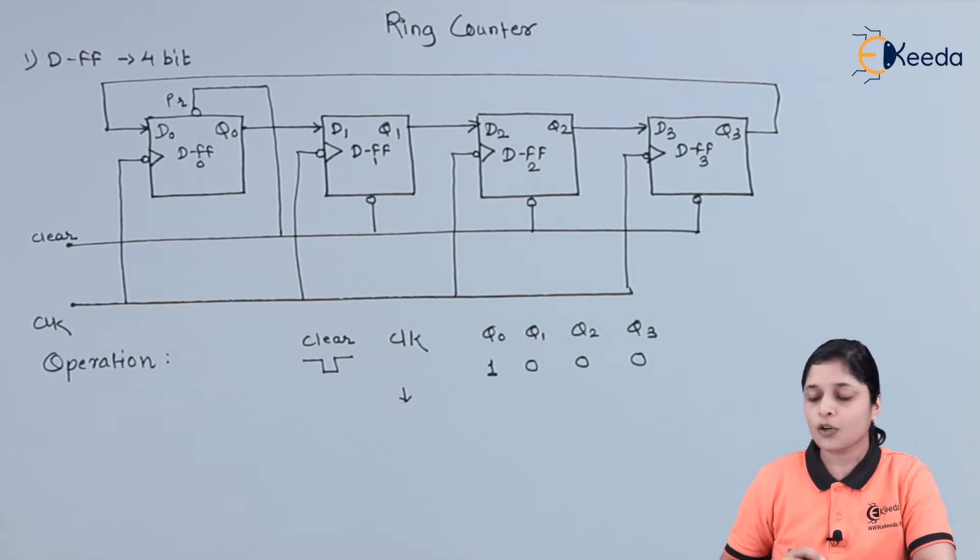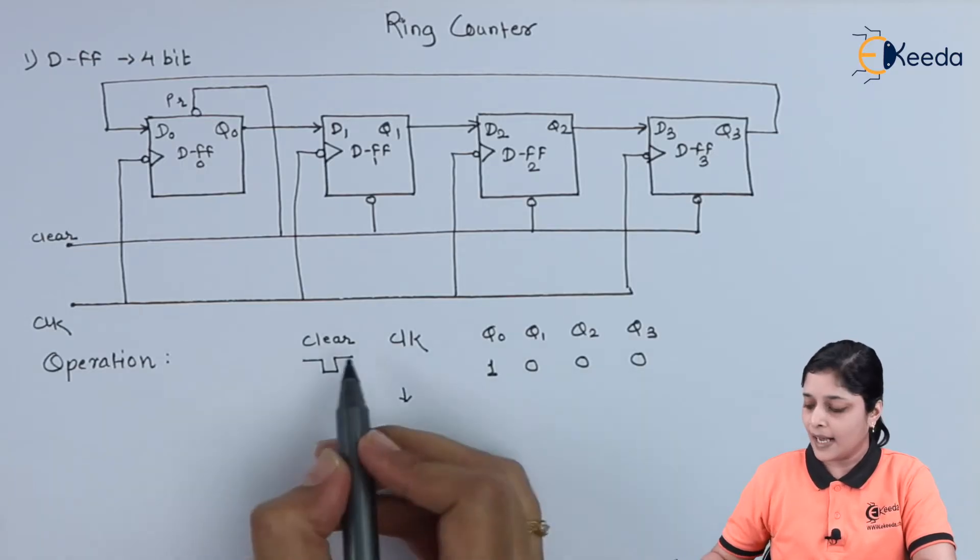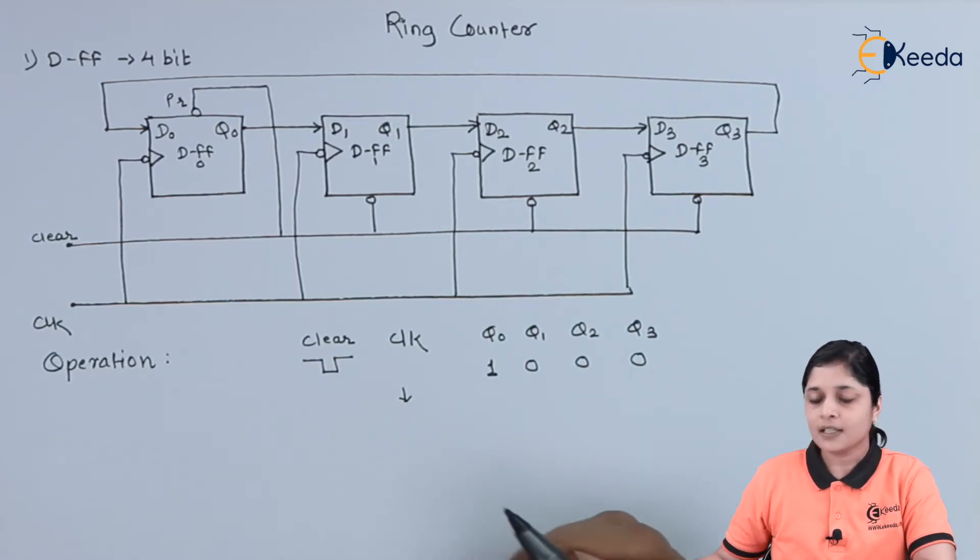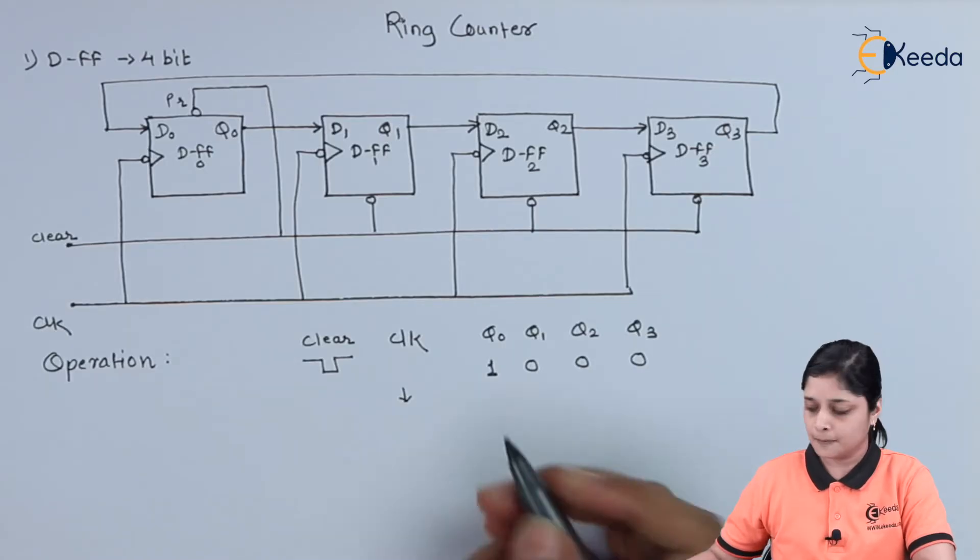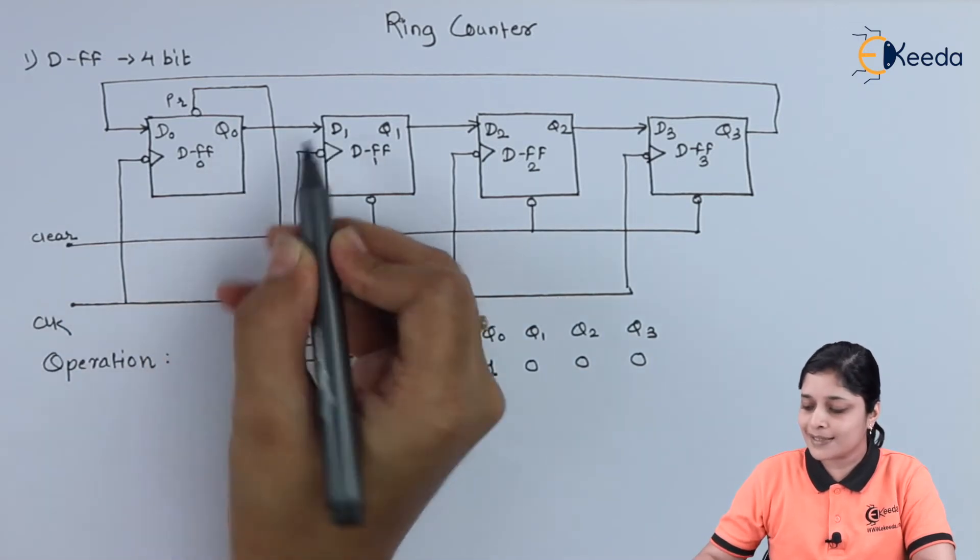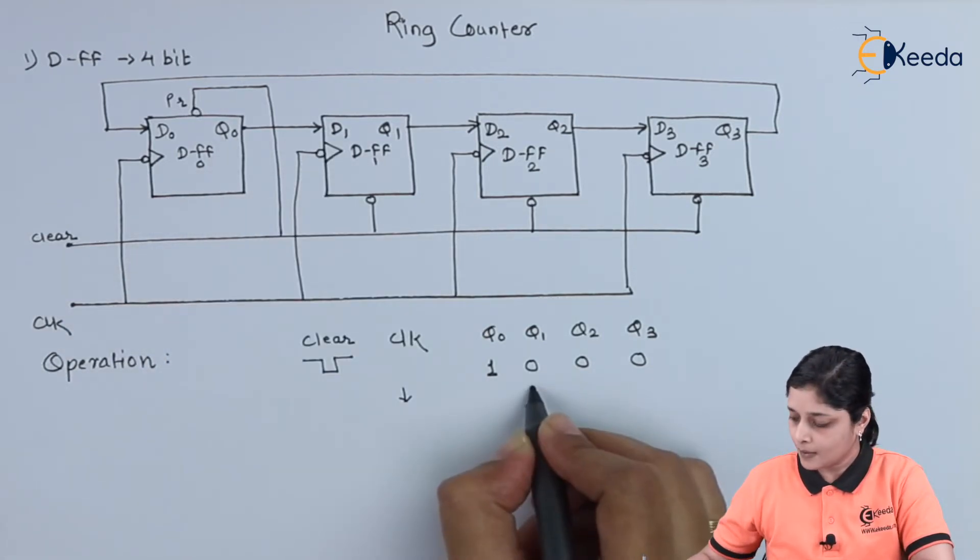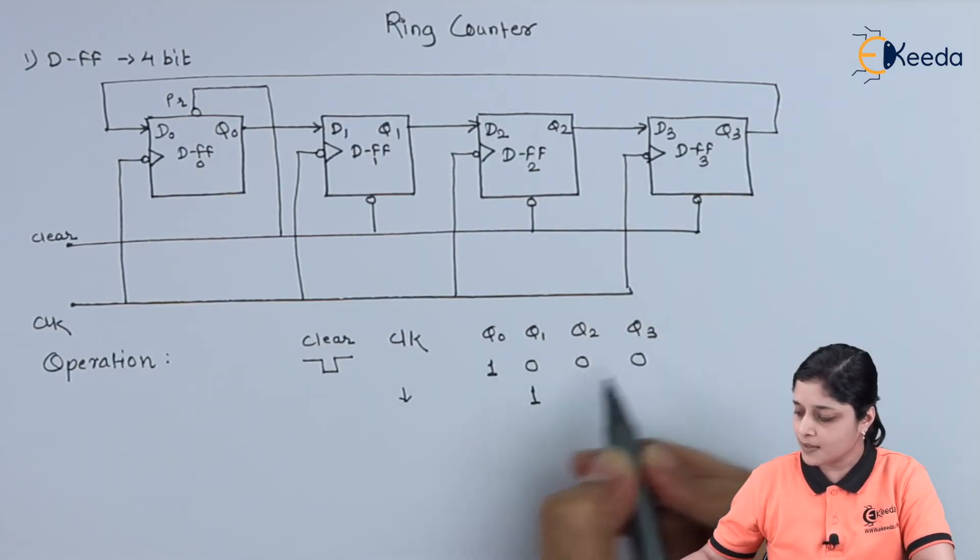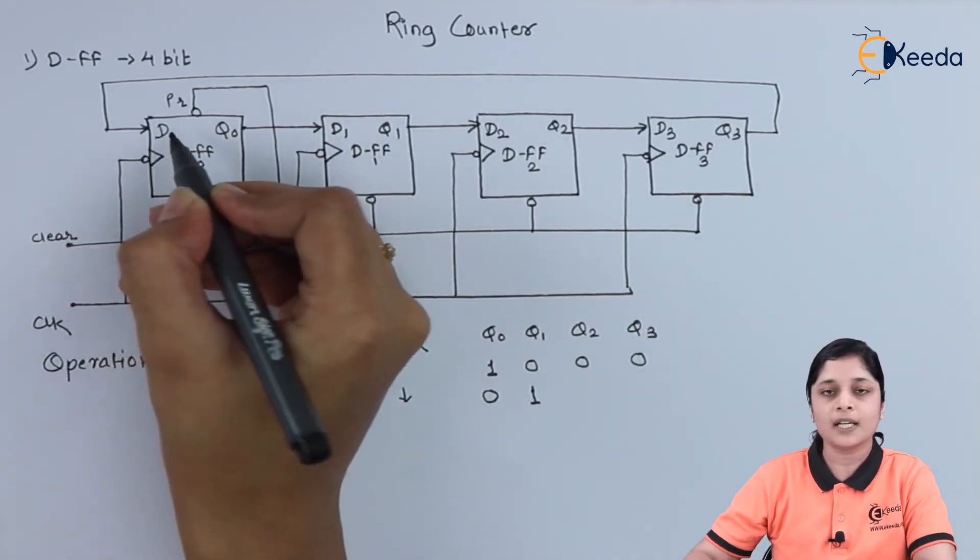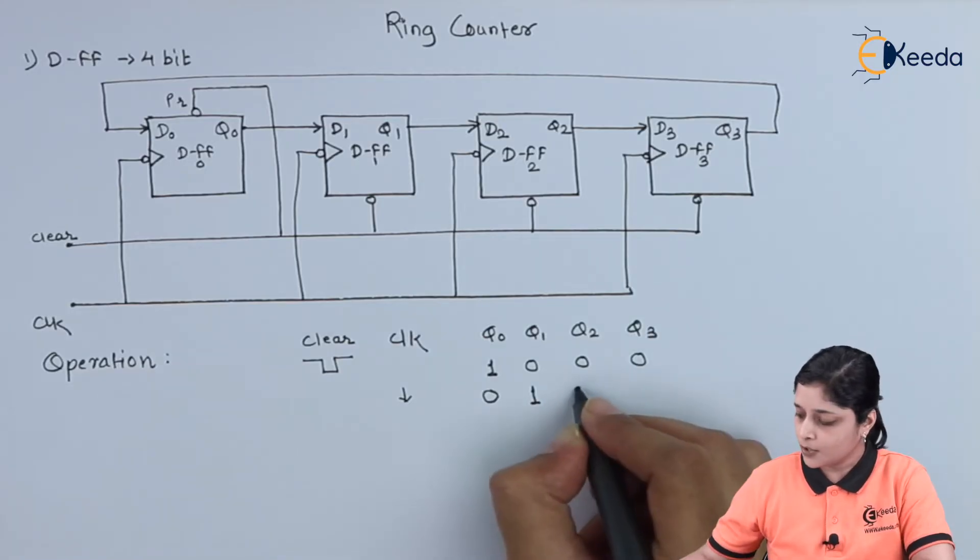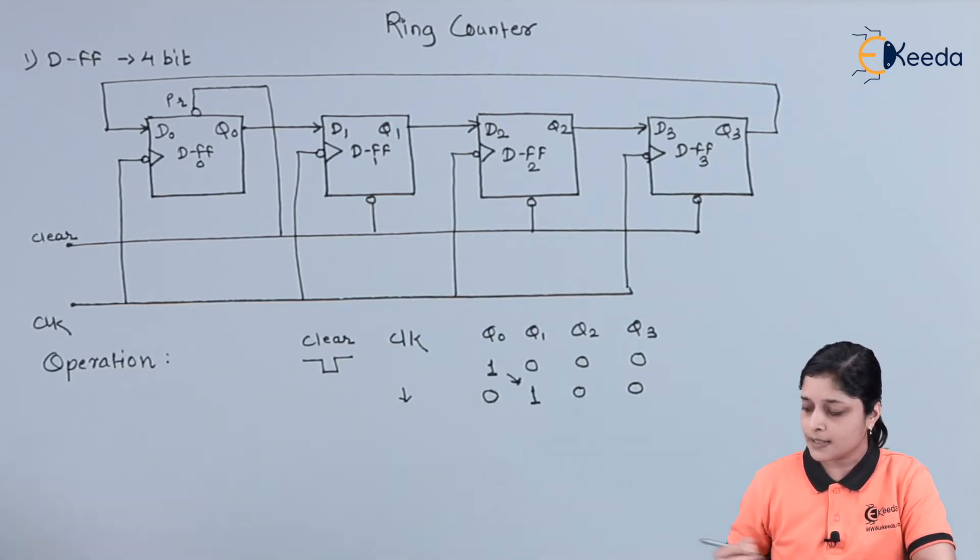We have to apply a clock signal and inactivate the clear signal. After that, we will apply our negative edge-triggered clock signal. As soon as the clock is applied, this Q0 is given to the D1. Q1 becomes 1 and this Q3 means this 0 becomes input for D0. So Q0 again becomes 0 and Q2 and Q3 are 0, 0.